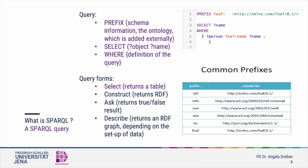The query form SELECT returns a table as a result. You could also choose different query forms like CONSTRUCT, which returns RDF; ASK, which returns a true or false result; or DESCRIBE, which returns an RDF graph. You could also choose a different prefix if FOAF does not contain the parameters you are looking for. It is often useful to combine prefixes and use a few of them at the same time, and this gives you more possibilities. We will come back to this later.